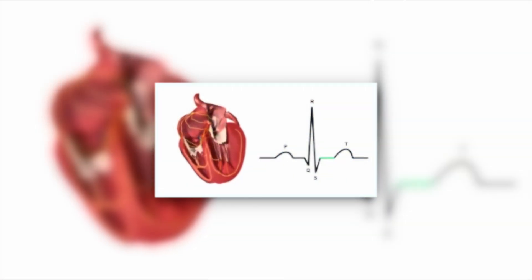An ECG measures the electrical activity of the heart and produces a graph that shows the rhythm and timing of each heartbeat. The graph is made up of waves and segments that represent different phases of the heart's electrical cycle.